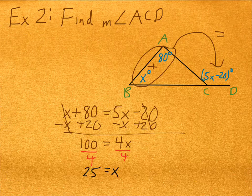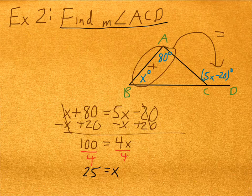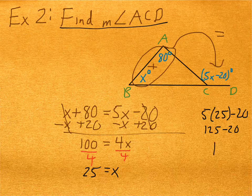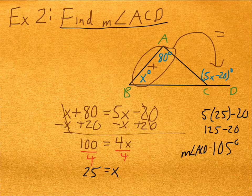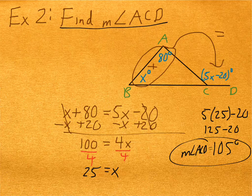But I'm not done. I need to find the measure of angle ACD. So plugging that in, I would have 5 times 25 minus 20. 5 times 25 is 125. Subtract 20, 105 degrees. So the measure of angle ACD is equal to 105 degrees. That's it. I will see you guys in class, and we'll practice this a little more. You're welcome.